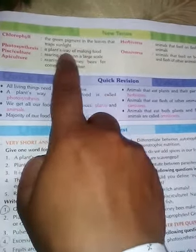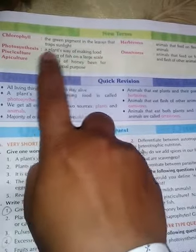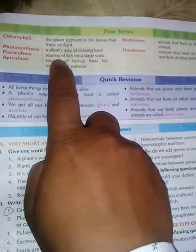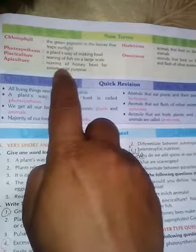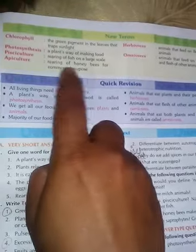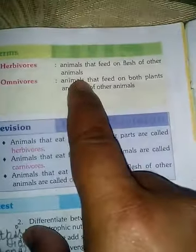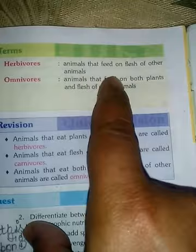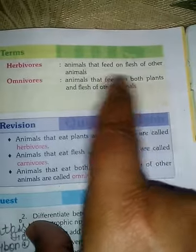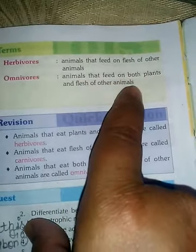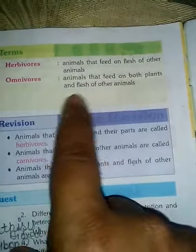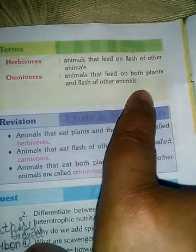Photosynthesis — a plant's way of making food. Pisciculture — rearing of fish on a larger scale. Apiculture — rearing of honeybees for commercial purpose. Herbivore — animals that feed on plants. Omnivorous — animals that feed on both plants and flesh of other animals.